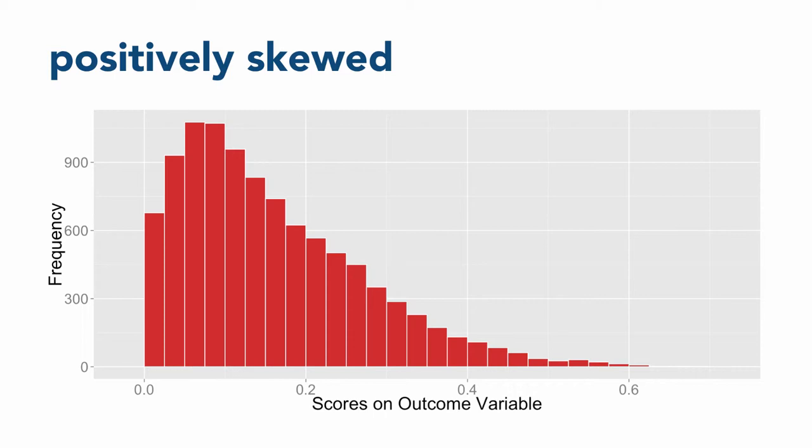This kind of distribution often happens with things related to money, such as income, where most people earn a small or moderate amount of money each year, but a smaller number of people earn an enormous amount. This is called a positively skewed distribution, or skewed right, because that's where the extreme scores are.